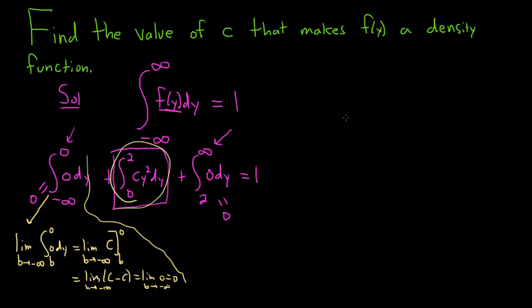So let's just focus on this. You can just start the problem here: integral from 0 to 2 of cy squared dy equal to 1. When you integrate y squared, you just get y cubed over 3 using the power rule. The c is a constant, so it hangs out. So we're going to get cy cubed over 3, and we're going from 0 to 2, and this equals 1.